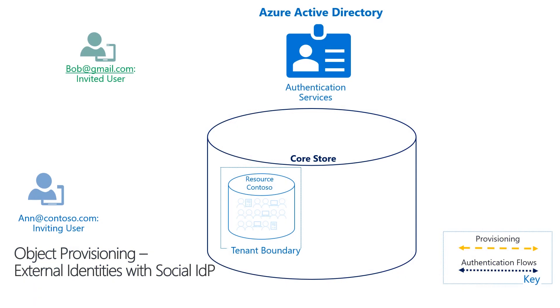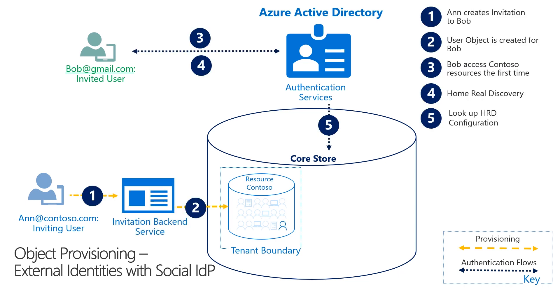User objects can also be provisioned with a social ID — for example, Gmail. The flow is very similar except instead of having users from two different Azure AD tenants, you have Ann from Contoso, the resource tenant, inviting Bob who has a Gmail account. For this to work, the Contoso administrator has to configure Gmail as an identity provider. Steps one through five are exactly the same as the previous diagram, and then Azure AD authentication services has the ability to go and talk to Gmail, redirecting the user to authenticate with Gmail using OAuth.